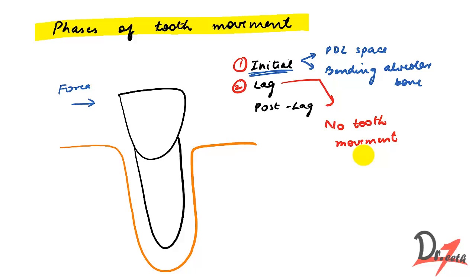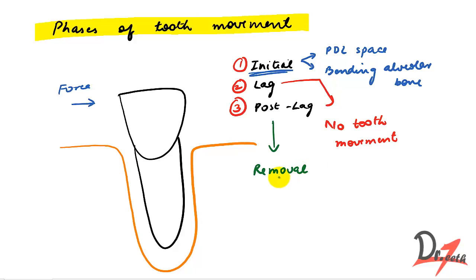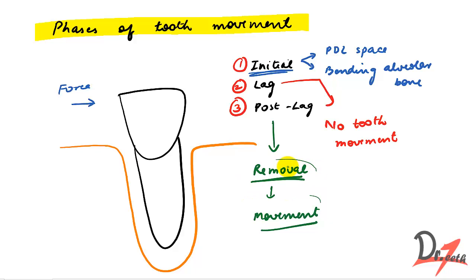The third phase is the post-lag phase. In this phase the hyalinized area is removed, and once hyalinization is no longer present, tooth movement resumes. To summarize: in the initial phase there is movement within the socket; in the lag phase there is no or minimal tooth movement; and in the post-lag phase movement resumes due to removal of the hyalinized area.